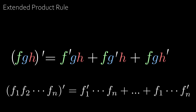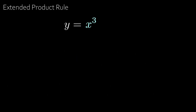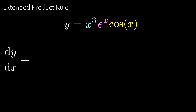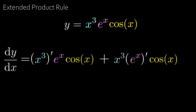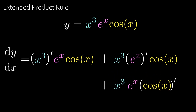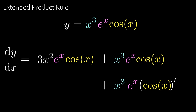For example, take y = x³·eˣ·cos(x). Then dy/dx equals the derivative of the first function times the other two, plus the derivative of the second times the other two, plus the derivative of the third times the other two. The derivative of x³ is 3x², the derivative of eˣ is eˣ, and the derivative of cos(x) is −sin(x), giving us the final expression for dy/dx.